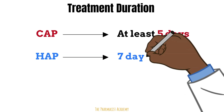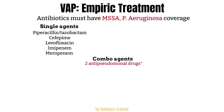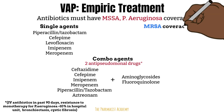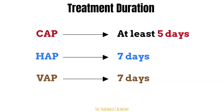Treatment for VAP is very similar to HAP. The same single agents apply, and for combination therapy where two anti-pseudomonal drugs are required, the same medications and risk factors apply. Similarly, for MRSA coverage with the same risk factors, we use the same drugs. Duration of treatment is also similar to HAP — seven days. For all three classifications, antibiotics should be de-escalated according to culture results.